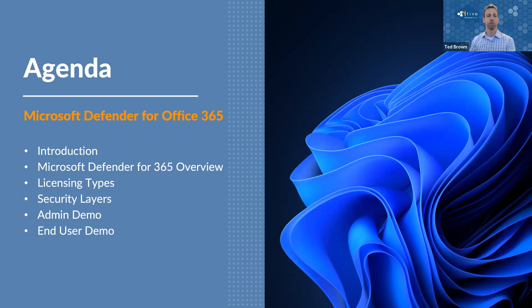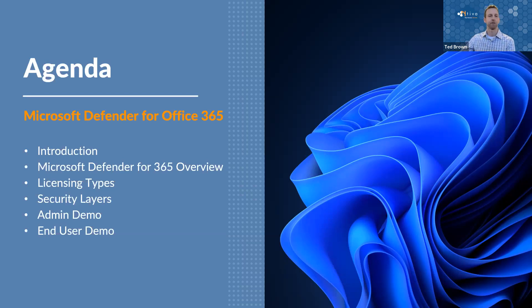We're going to be covering the overview of Microsoft Defender for Office 365, getting into different licensing types, and going into the security layers so you know the ins and outs of the Office 365 protection layers. We'll do a little admin demo and an end-user demo. There's not too much on the end-user side besides getting quarantine and junk mail notifications. This will be a bit more PowerPoint-driven than previous Lunch and Learns.